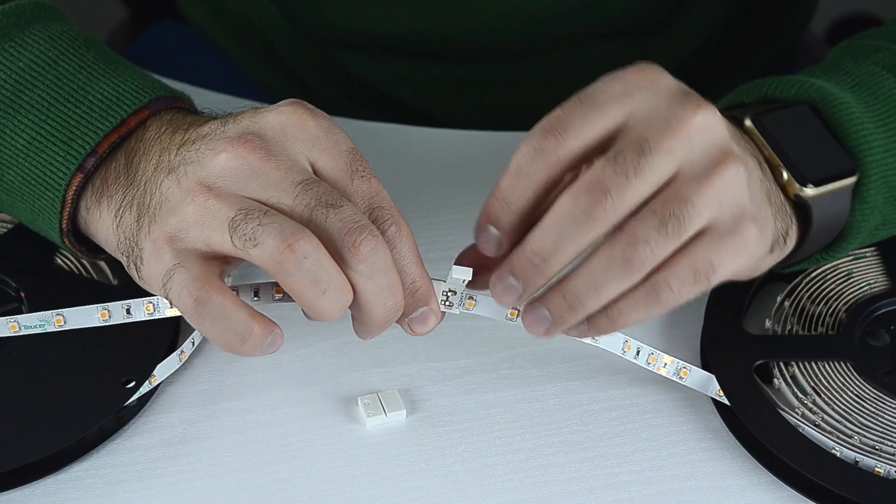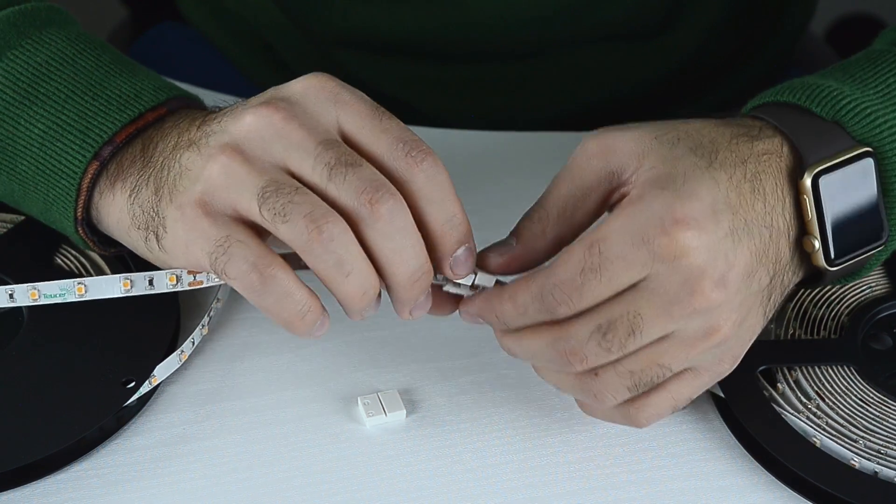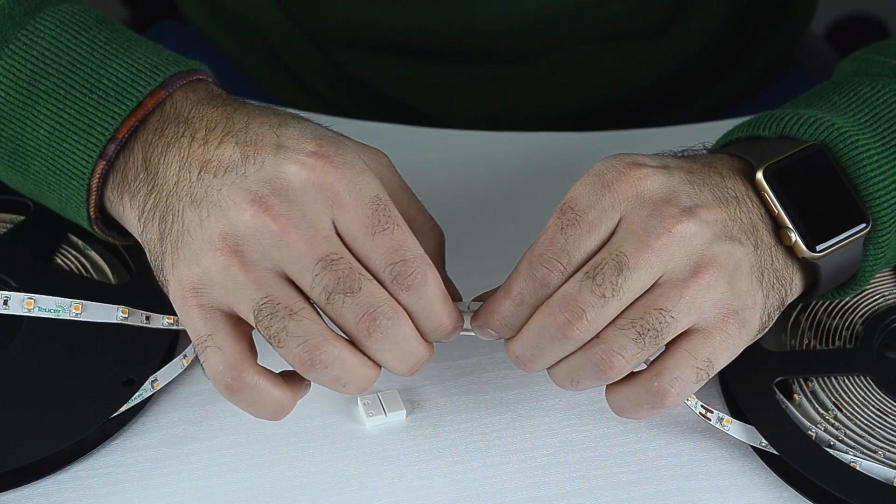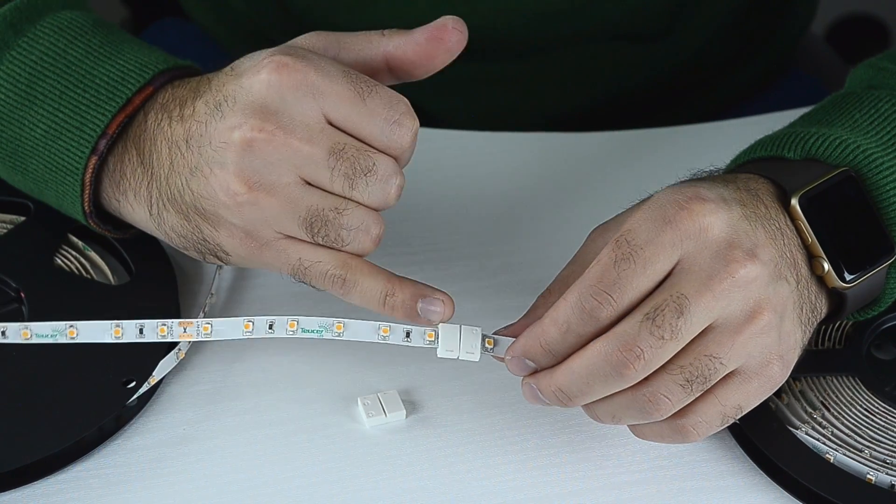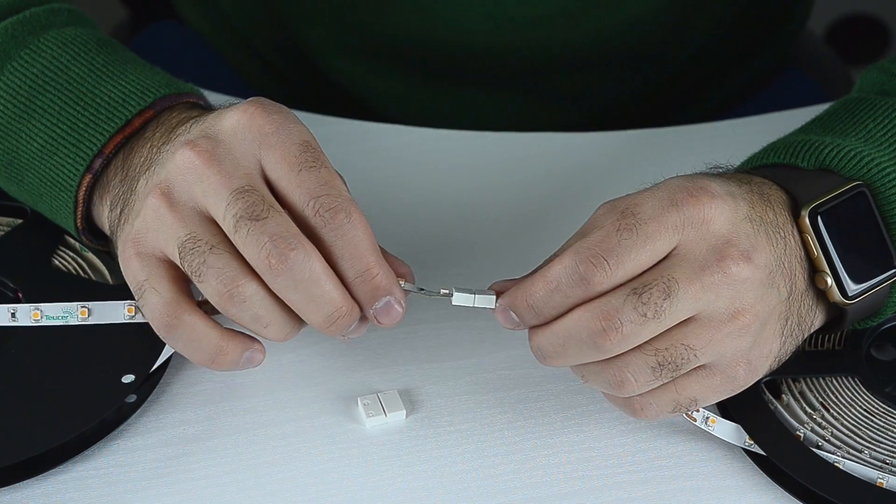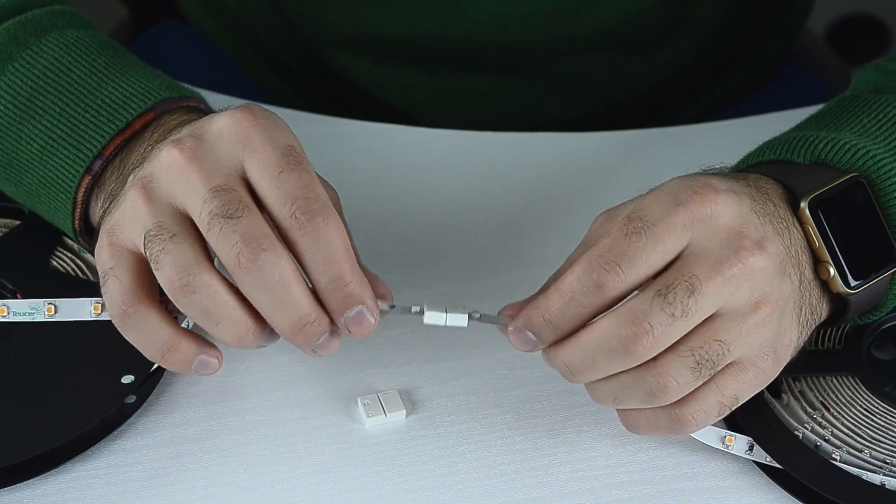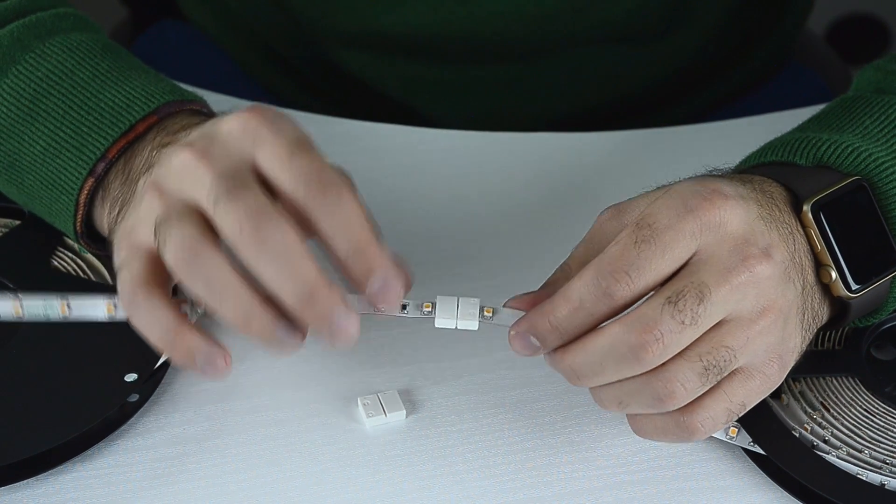Close the lid of the connector. You will know that it is securely closed when you hear a click. If you do not hear the click and you are unable to close the connector, please make sure the strip is below the ridges. Do not try to force it shut as this will damage the strip and you will not have a proper connection.